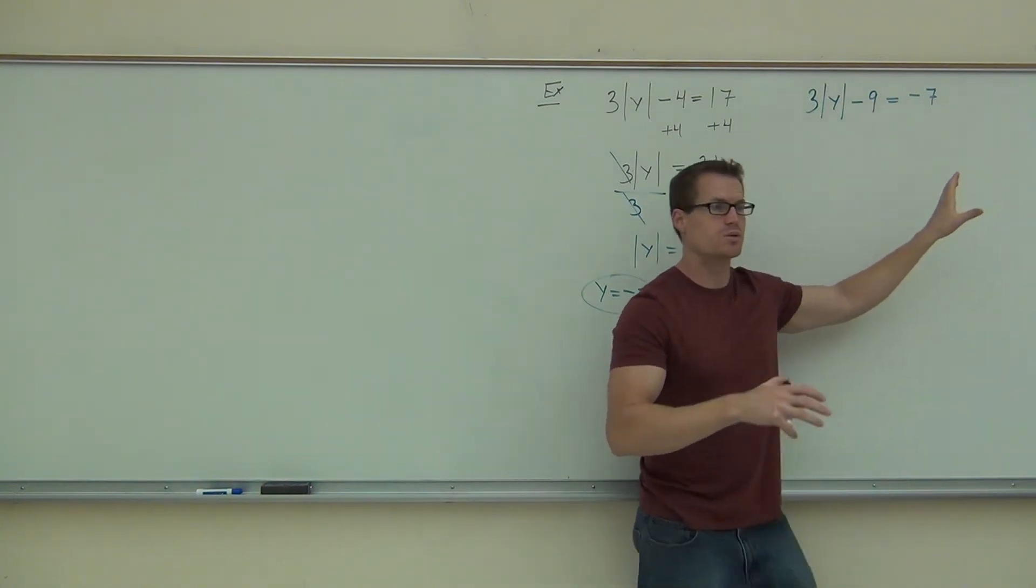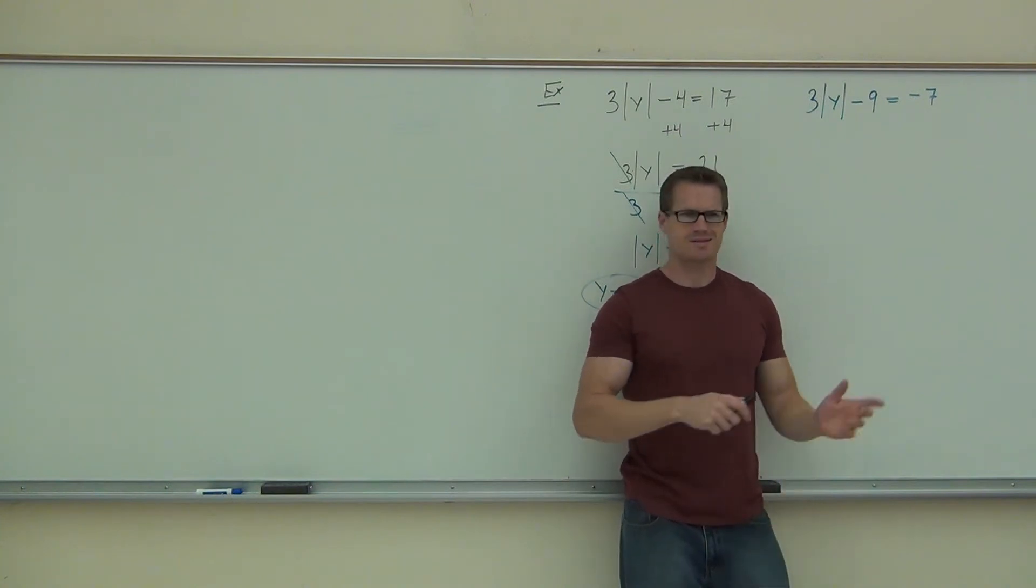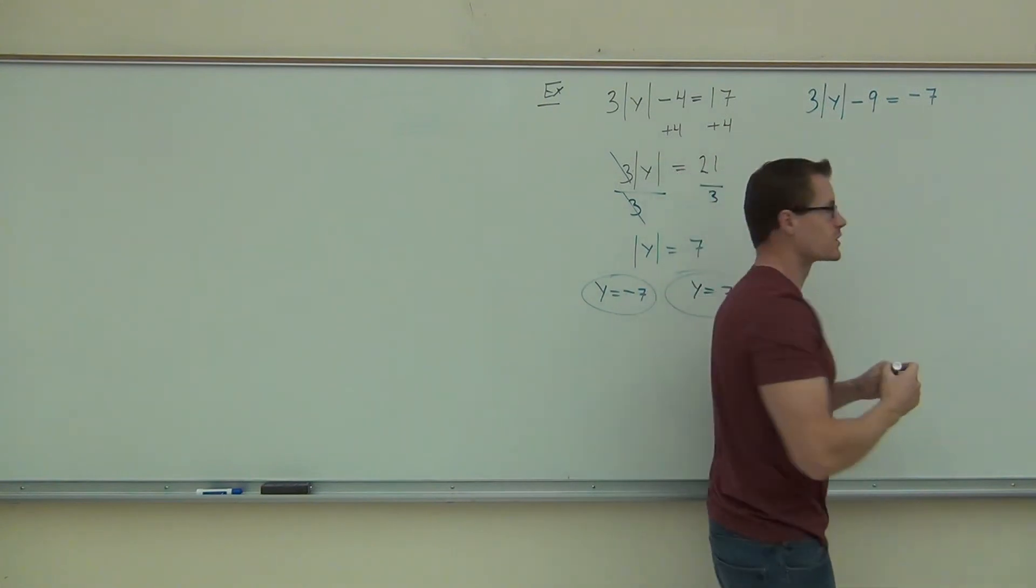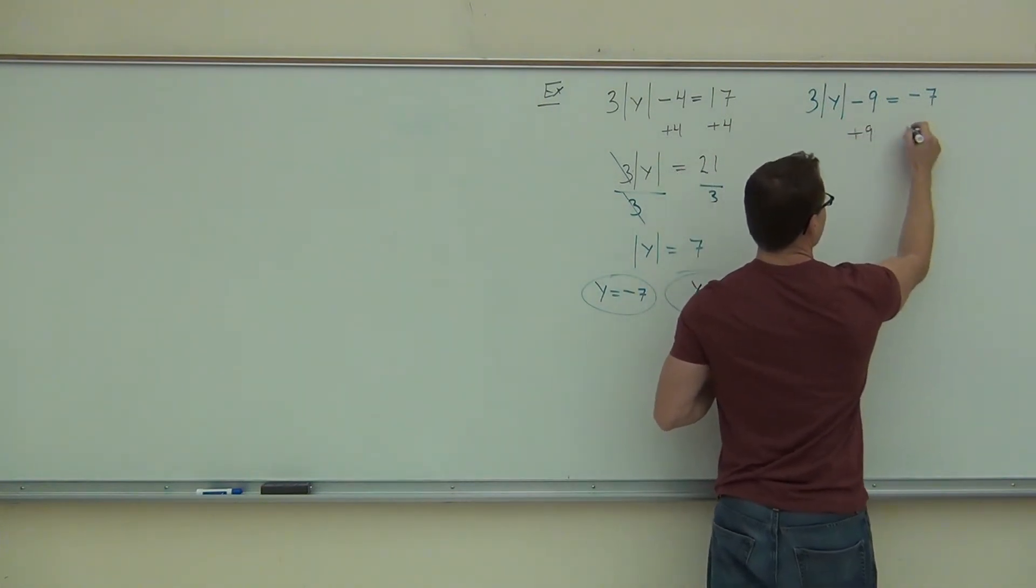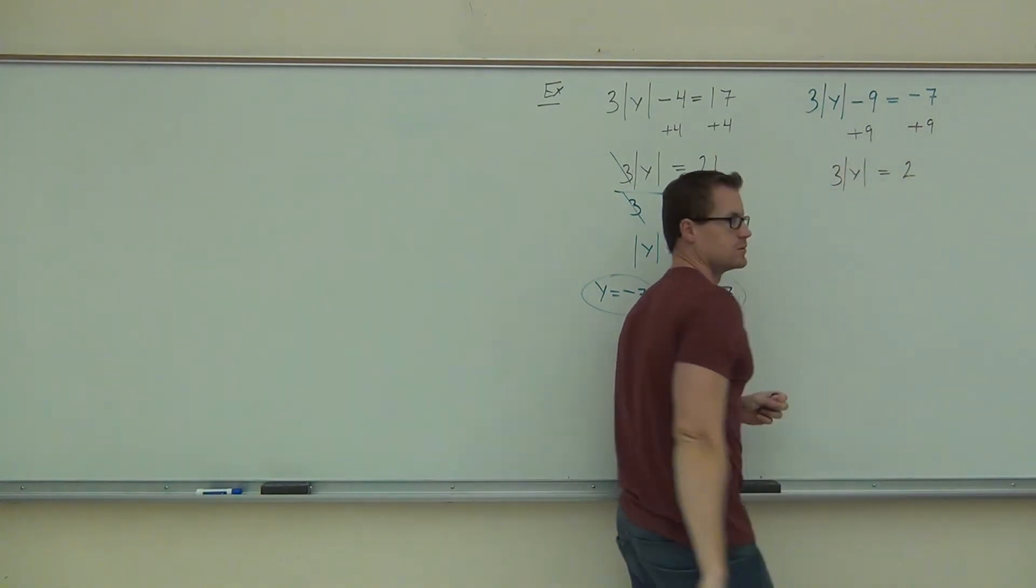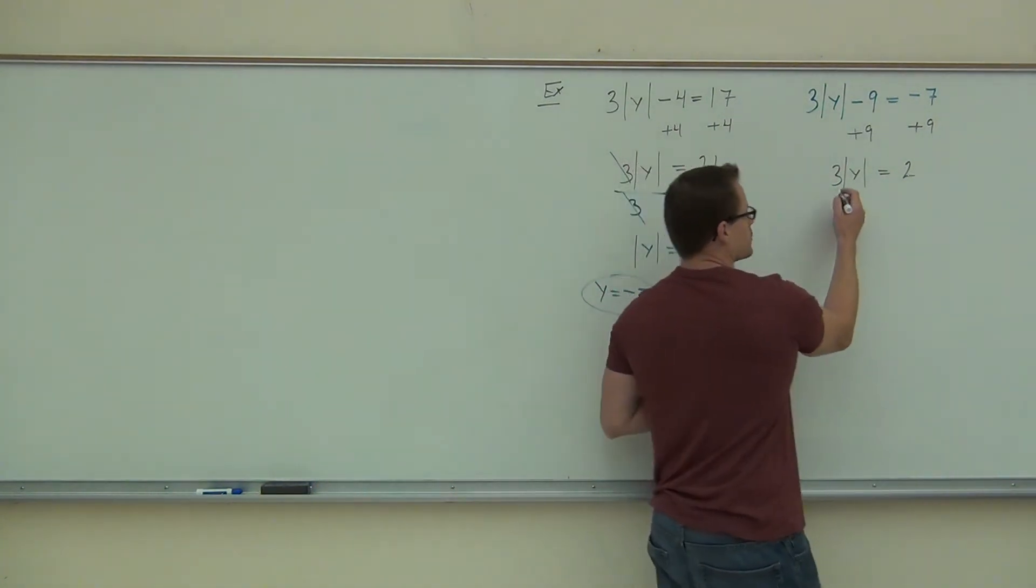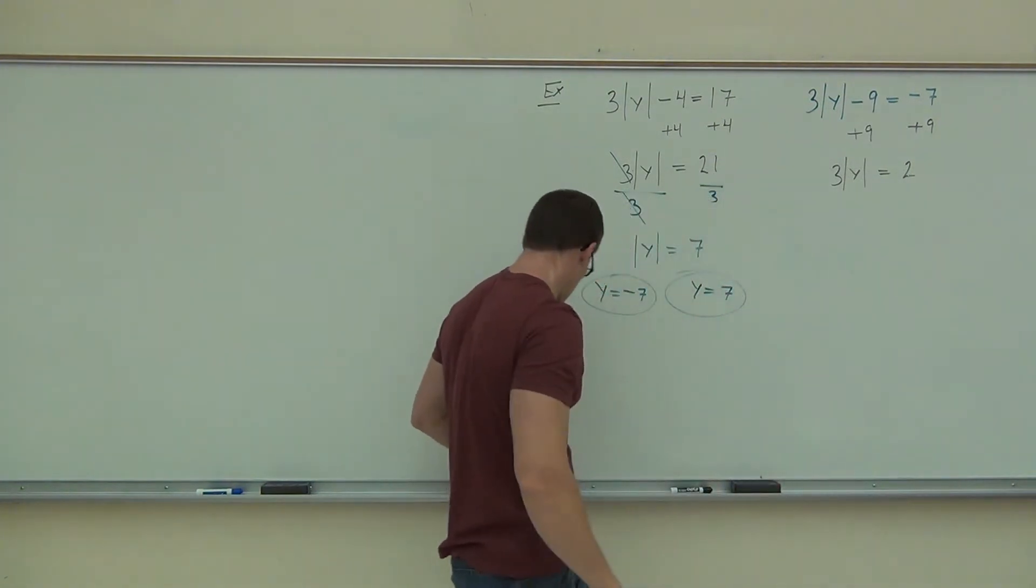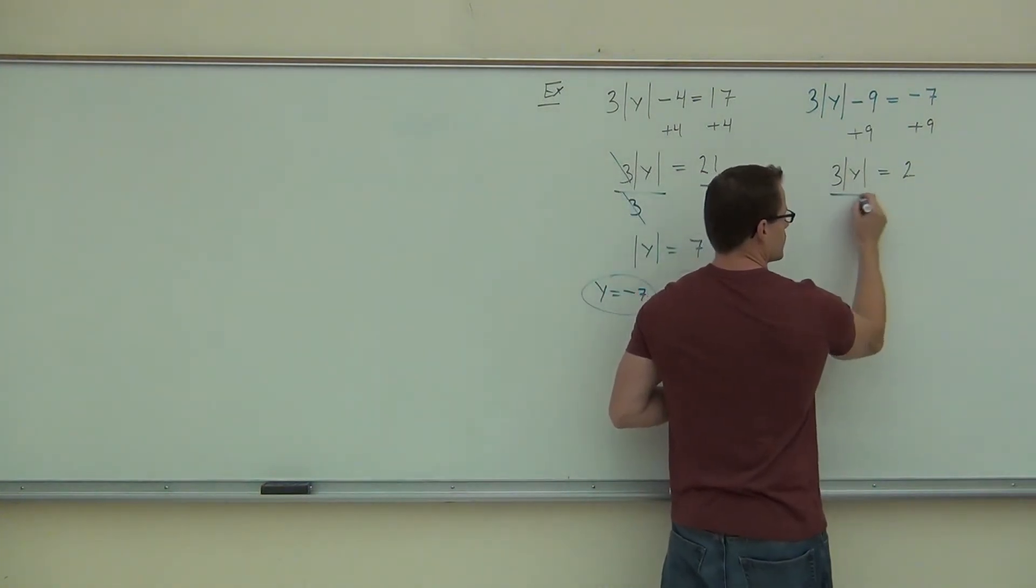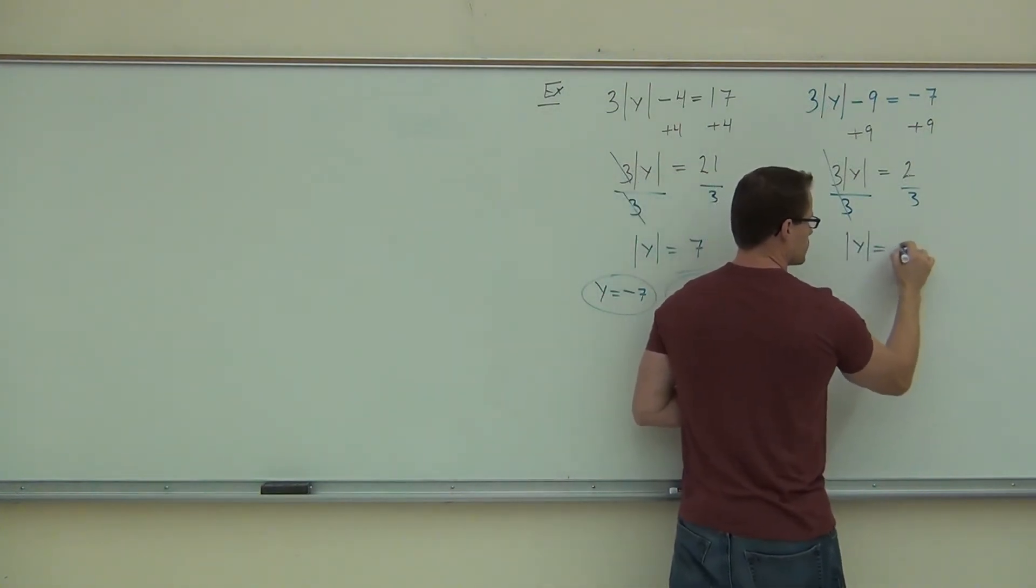Some people, if they don't know what they're really doing, they're going to go, oh, absolute value equal to a negative? That's no solution. Remember talking about that? No, we have to get the absolute value by itself before we make that determination. So, of course, we're going to add 9. I hope you did that. We'll get 3 times the absolute value of y equals 2. What are you going to do now, or what did you do now? Great, get rid of that 3. We certainly don't want that thing hanging around our absolute value. What we want is absolute value equals a number. That's what we need to work with this problem. So, absolute value of y equals 2 thirds.